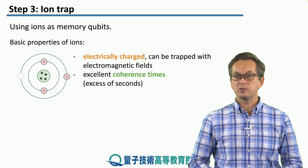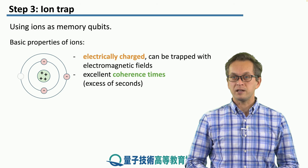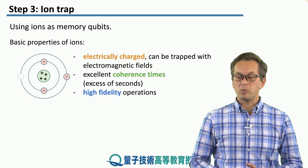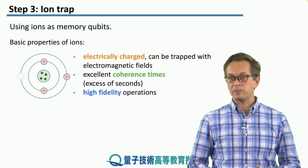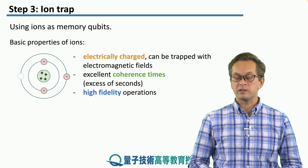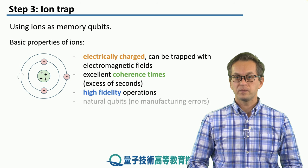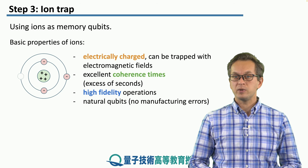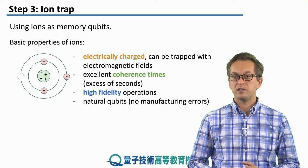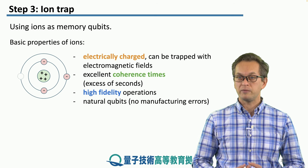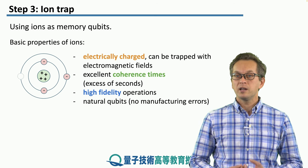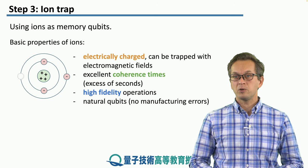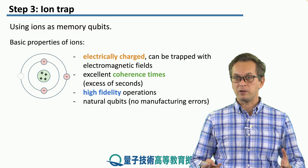Ions have extremely good coherence times — in many cases in excess of many dozens of seconds. The operations we use to apply and manipulate ions are extremely high fidelity. And one interesting advantage is that these qubits are natural qubits, meaning that nature provides them to us; we don't have to synthesize or manufacture them. This means all of these qubits are by default identical, which is always a very good property when you think about large scale.